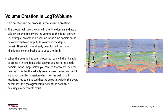Volume creation in Log2Volume is the final step in the process. This process will take a volume in the time domain and use a velocity volume to convert the volume to the depth domain. For example, an amplitude volume in the time domain could be converted to an amplitude volume in the depth domain. These will have already been loaded back into Kingdom. When this volume has been processed, you will then be able to access it in Kingdom as the seismic volume in the depth domain. In the image below, you can see that we've used the overlay to display the velocity volume over the seismic, which is a robust depth conversion which ties the wells at all locations.